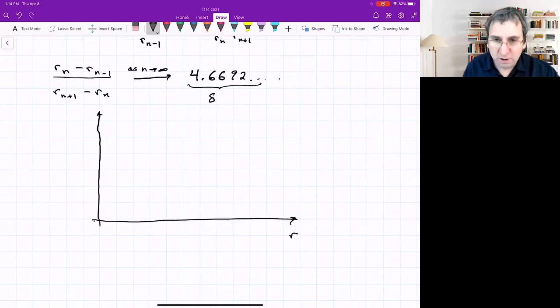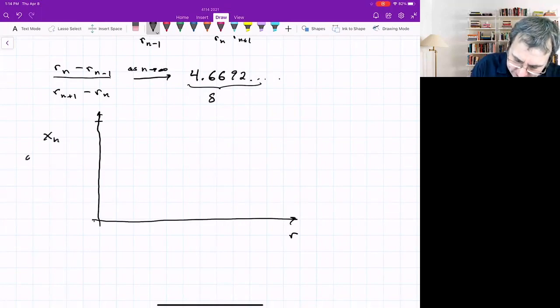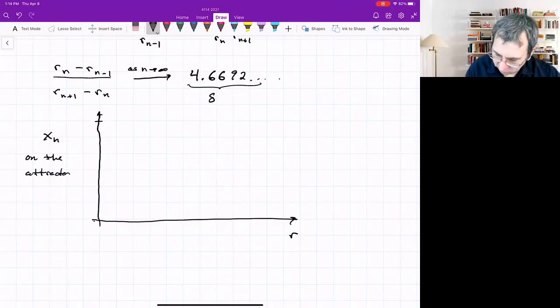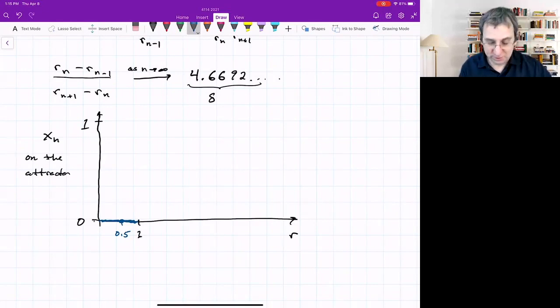We're plotting r and X_n on the attractor. We're plotting all the points on the attractor. For 0.5, we were at zero. This only goes between 0 and 1. At 0.5, we were at zero. In fact, we stay at zero until the value 1. At point 1, zero is still a fixed point, but unstable, so we might draw that as dashed. What we care about is where the points are.